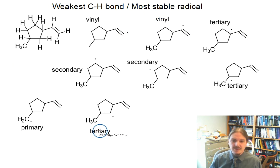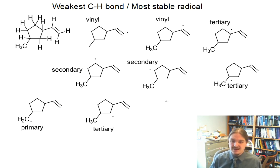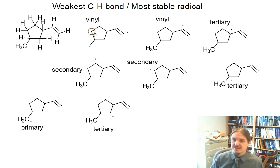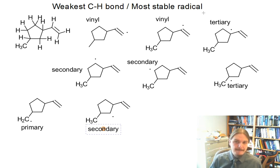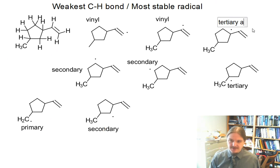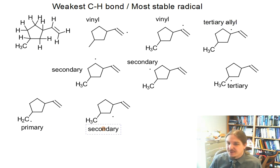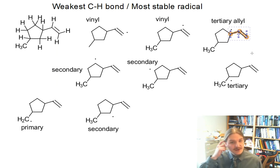If you remember that primary is less stable than secondary, and secondary is less stable than tertiary, we can start to remove some of these radicals from consideration. And if you remember that vinyl radicals are even less stable than primary radicals, we can eliminate two more. I made a mistake — this last one down here is secondary, not tertiary. In fact, we have two different tertiary radicals to consider, and they are a little bit different.